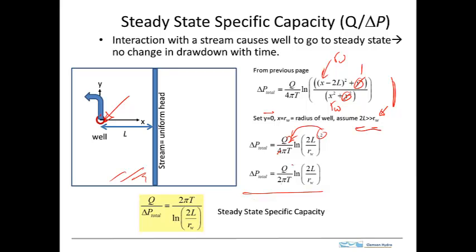The resulting formula for steady-state specific capacity is given in the yellow box. It requires transmissivity T, which we've already calculated; l, the distance to the nearest stream from a site map; and the well radius rw from the well completion record. This gives a straightforward way to calculate the steady-state specific capacity for a well interacting with a stream.